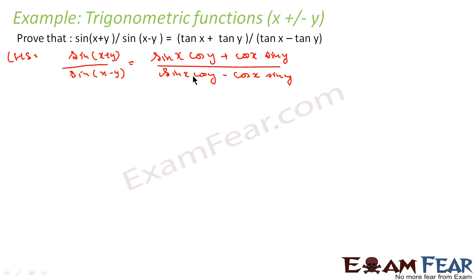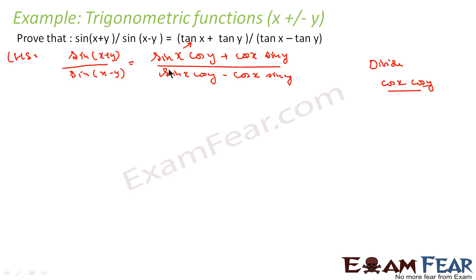Now we can divide the whole thing. We can see that we want to prove something involving tan x + tan y. So if we divide by cos x · cos y, we can make it into the form sin x / cos x. If you divide by cos x · cos y, the cos y will get cancelled and cos x will come in the denominator. Similarly, the same thing will happen in the other terms.